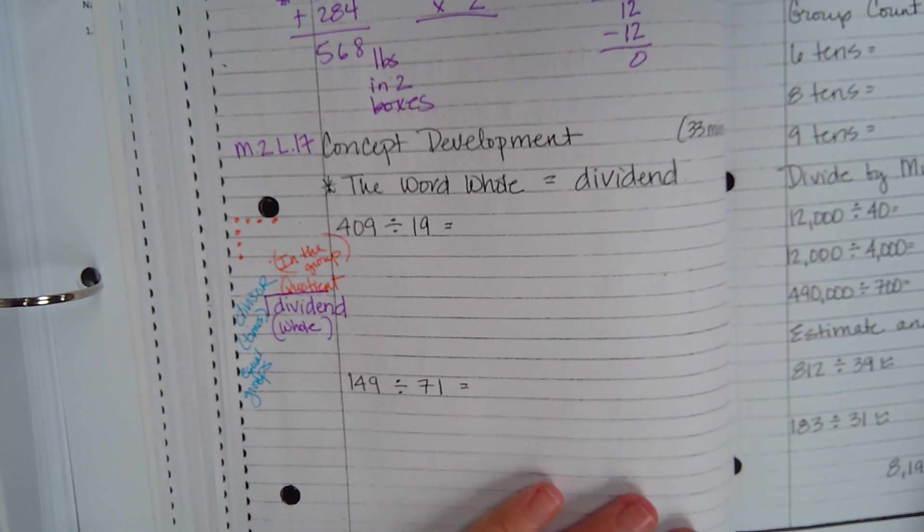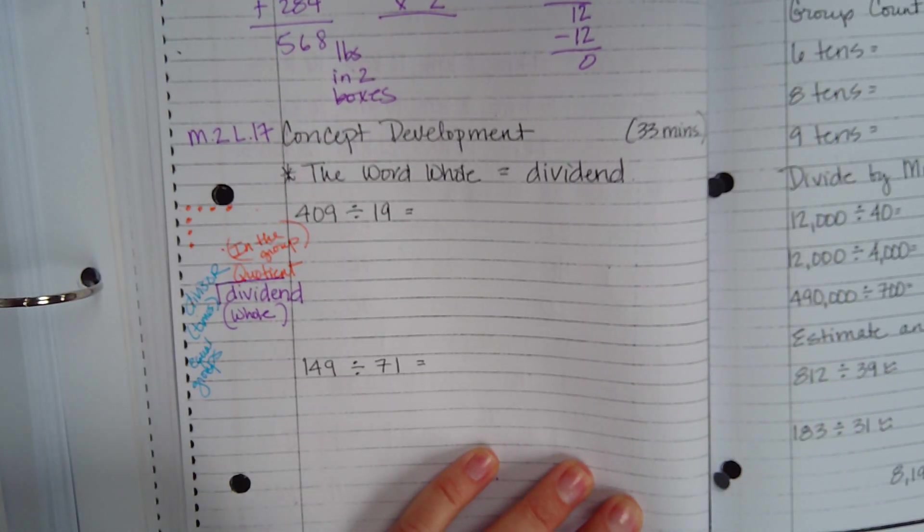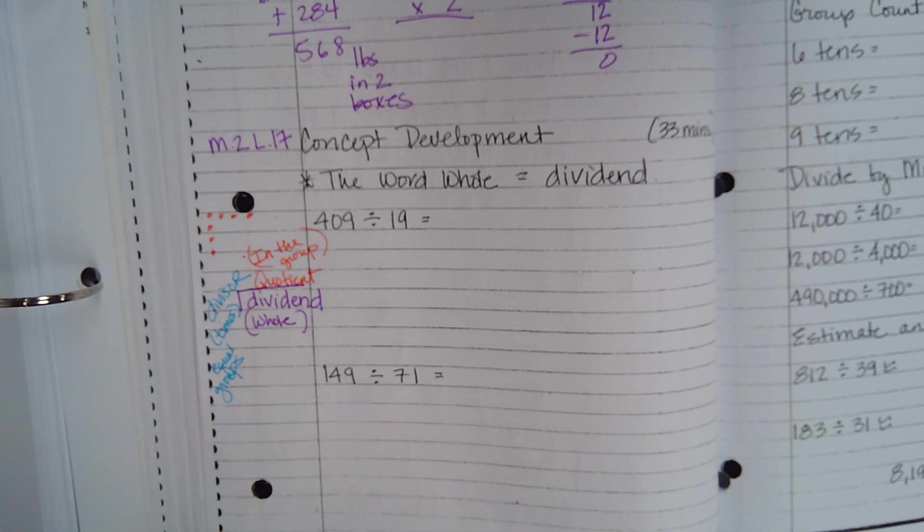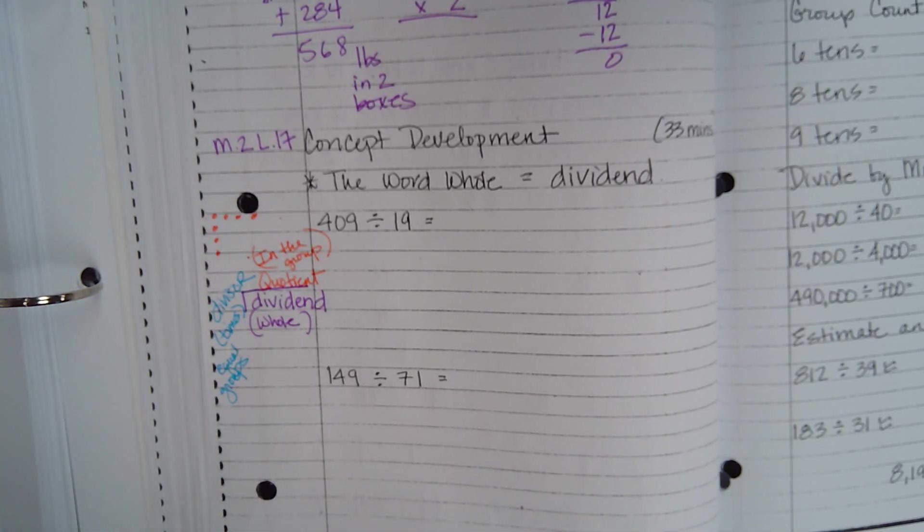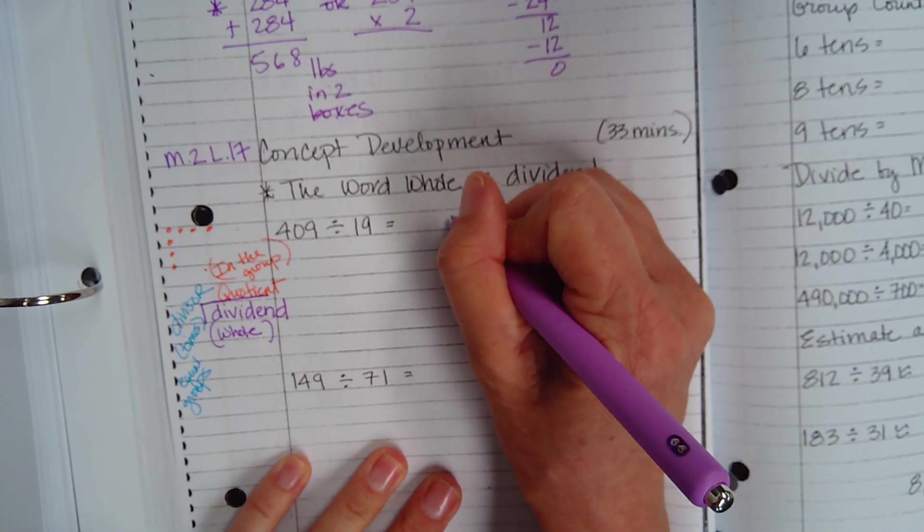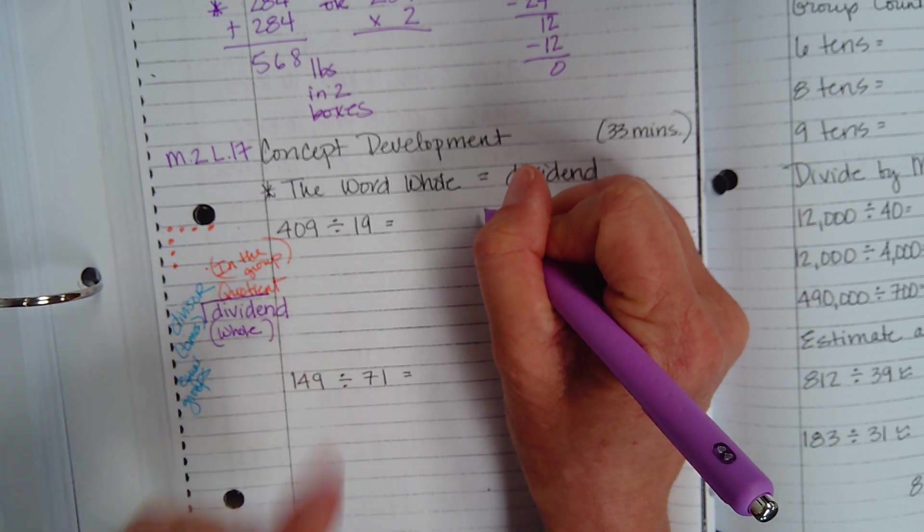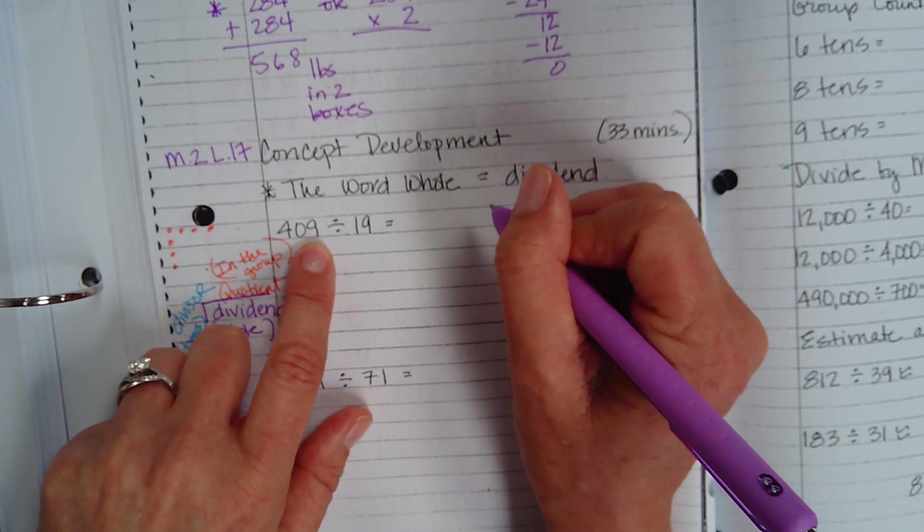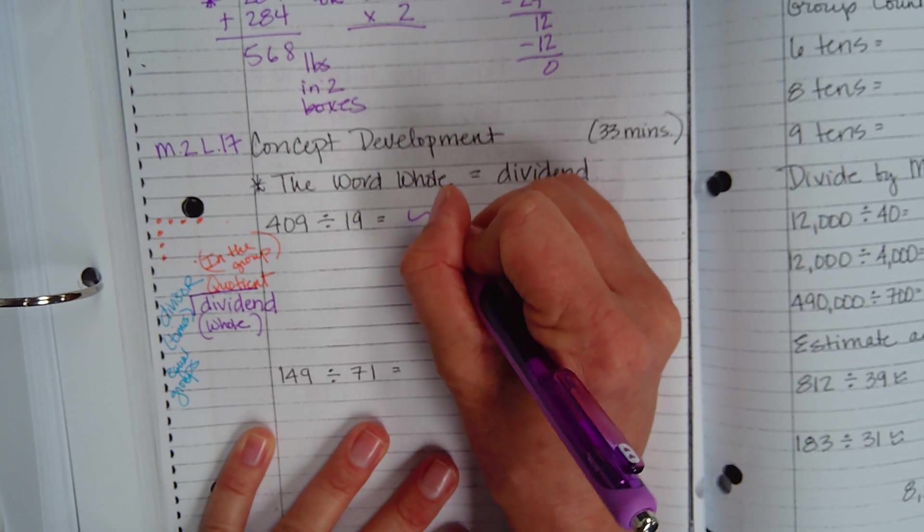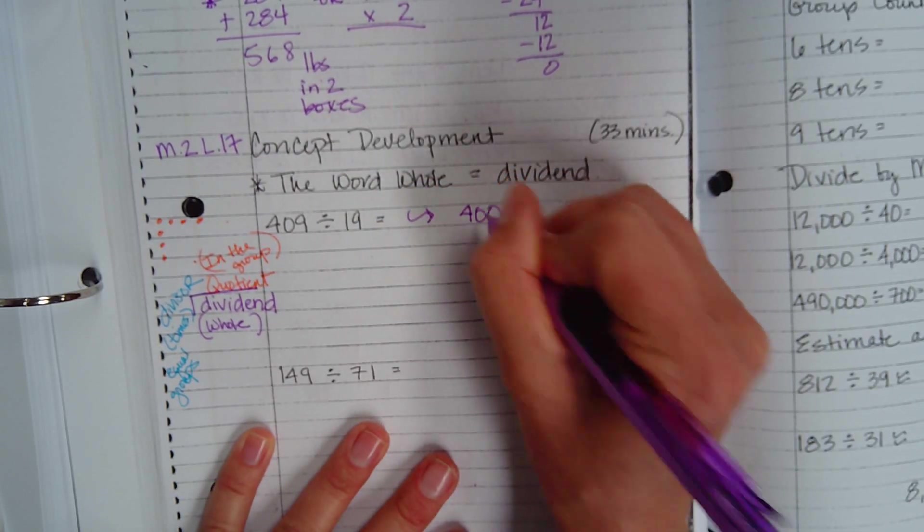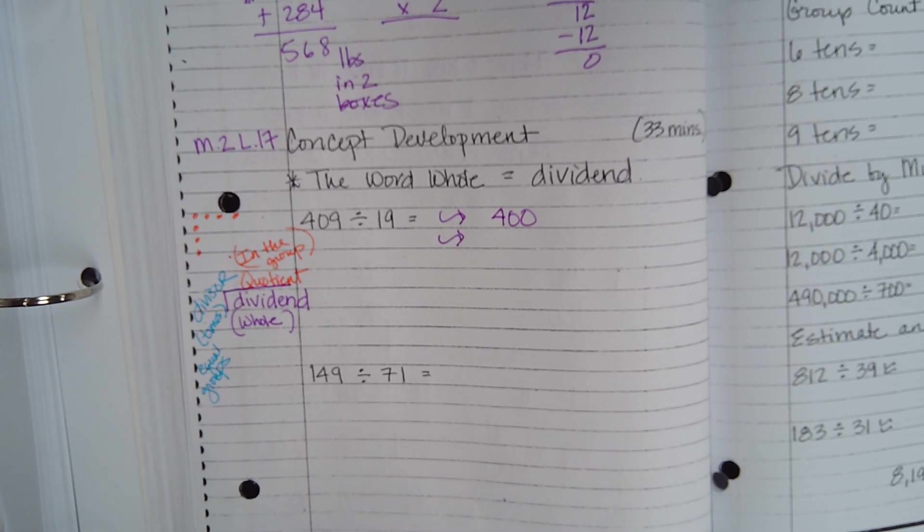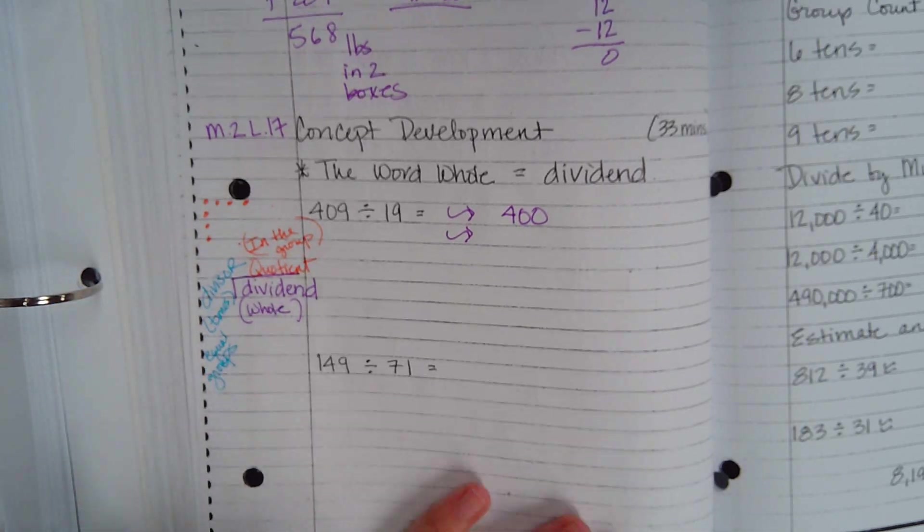Okay, so our goal today is to use basic facts to approximate quotients with two-digit divisors. So our big idea today is to take the whole and to round it. We're going to round the whole and we're going to round the divisor. So if we round 410, what are you going to round 410 to? I mean, sorry, 409. What are you going to round 409? Is 409 closer to 400 or is it closer to 500? Okay, so we're going to round 409 to 400, right? And we're going to round 19. Is 19 closer to 10 or 20? 20, right?